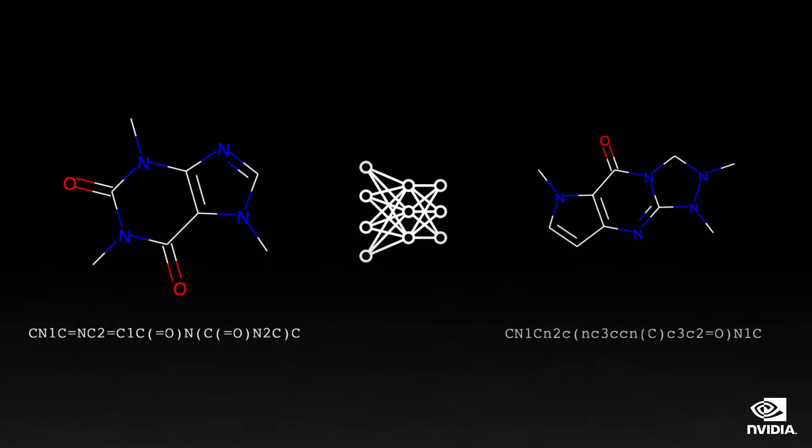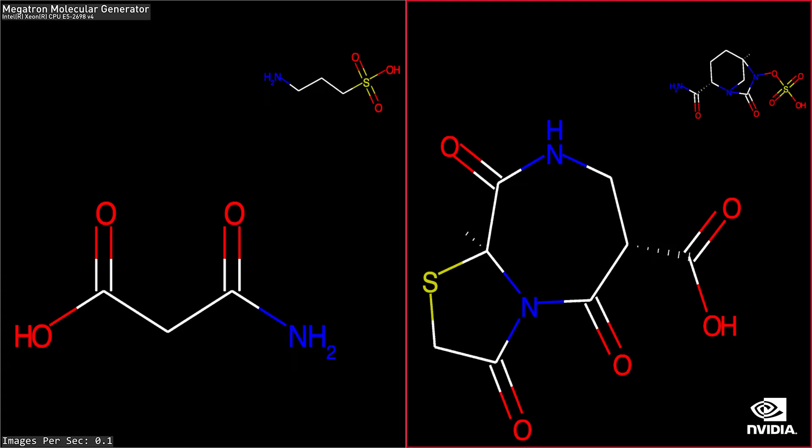Now we can use AI to generate candidate compounds that can then be further refined with physics-based simulations like docking or Schrodinger's FEP+. Generating with a CPU is slow.